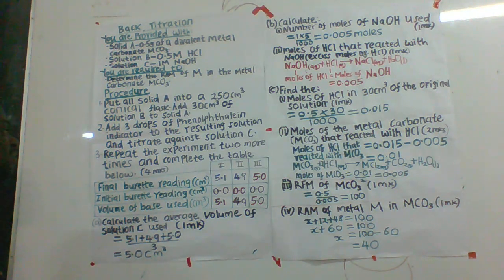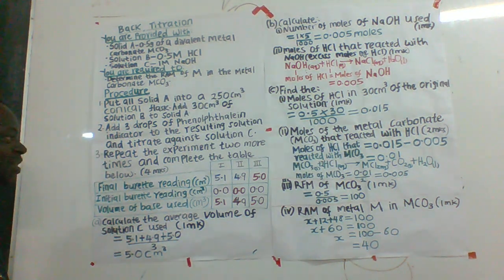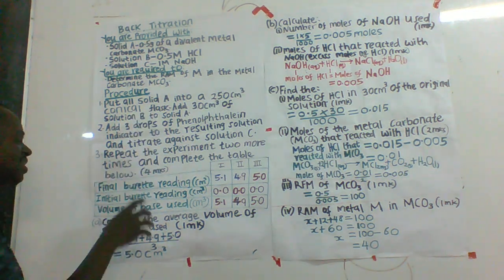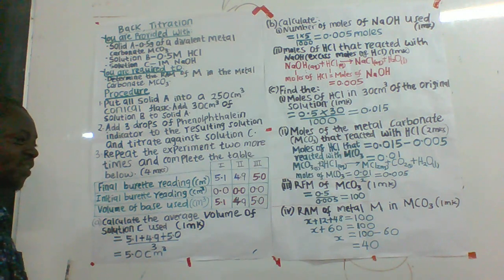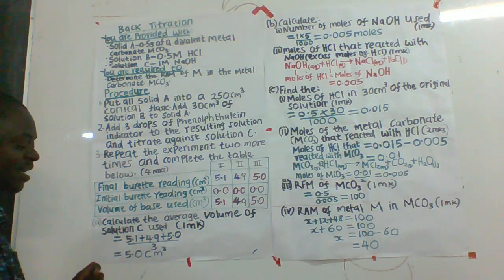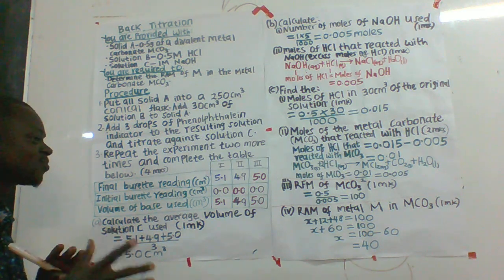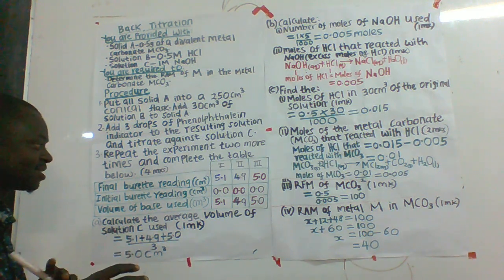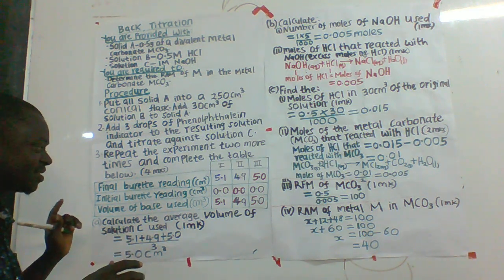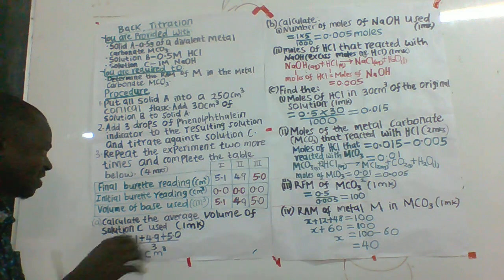Just to add on: in this reaction, hydrochloric acid is going to react twice. First, part of it is going to react with the metal carbonate. Then the remaining part is going to react with sodium hydroxide. So hydrochloric acid is in the middle of two reagents — that is, between the carbonate and sodium hydroxide.